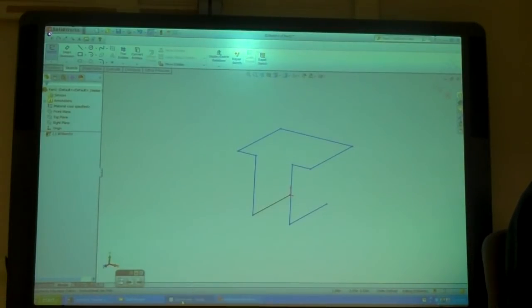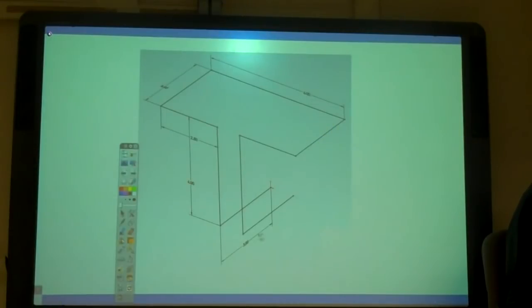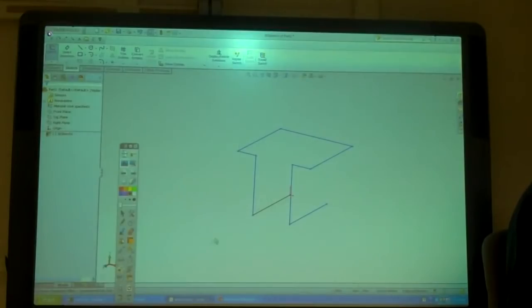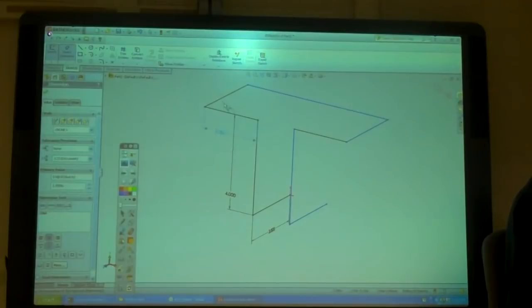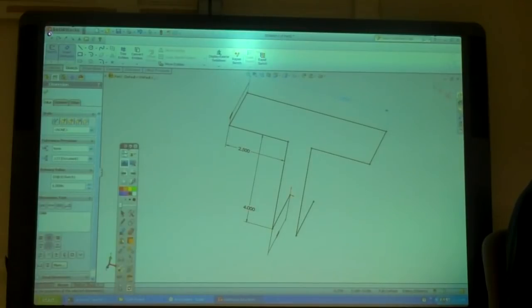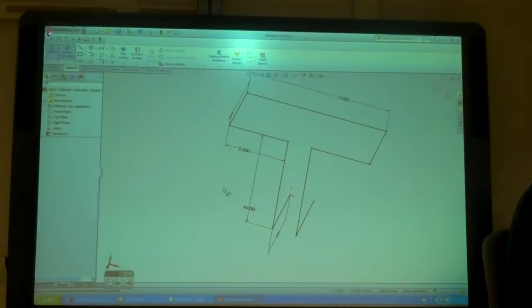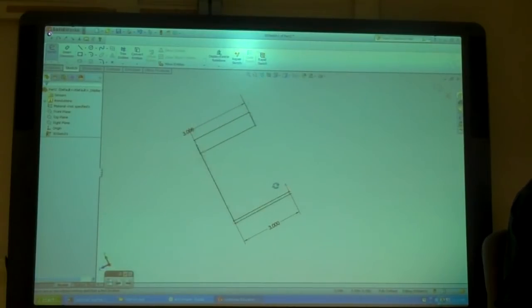So now I'll go ahead and start dimensioning. I want it to be 3 by 4 by 2.5 by 3. See how I go for all those. So now I've got all those dimensions in and it's fully constrained.